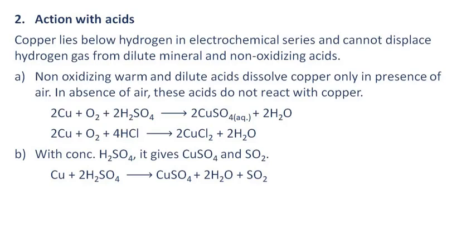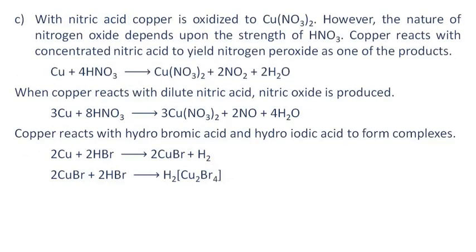In absence of air, these acids do not react with copper. Copper with concentrated sulfuric acid gives copper sulfate and sulfur dioxide. With nitric acid, copper is oxidized to cupric nitrate; however, the nature of nitrogen oxide depends upon the strength of the nitric acid. Copper reacts with concentrated nitric acid to yield nitrogen dioxide as one of the products. When copper reacts with dilute nitric acid, nitric oxide is produced. Copper also reacts with hydrobromic acid and hydroiodic acid to form complexes.